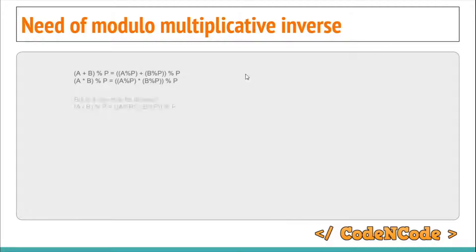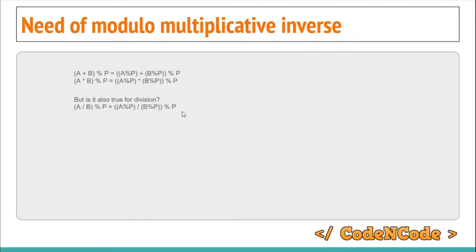But the question is: can you do the same with division? That is, can you calculate (a / b) modulo p as (a modulo p) divided by (b modulo p), and then take the resultant modulo p? Does it hold for division as well?